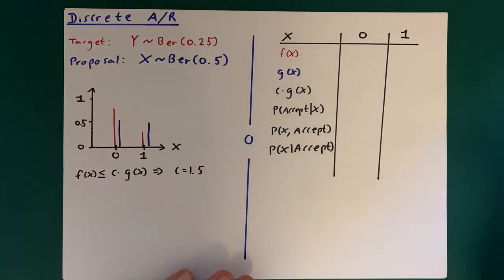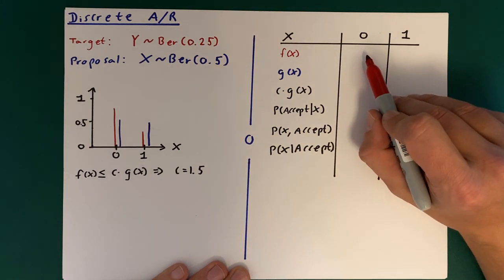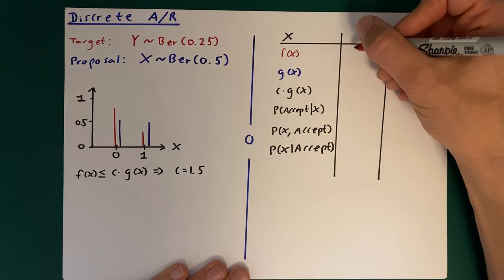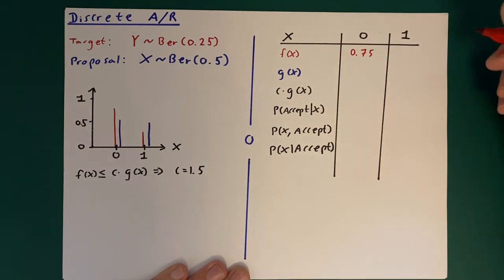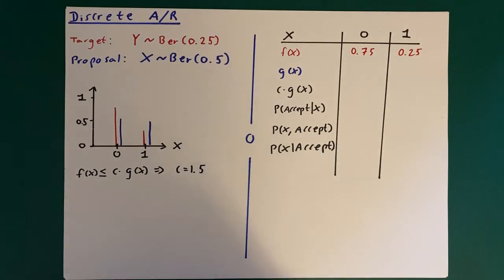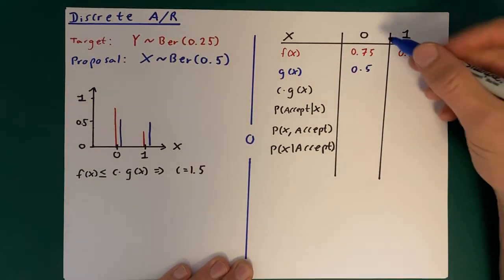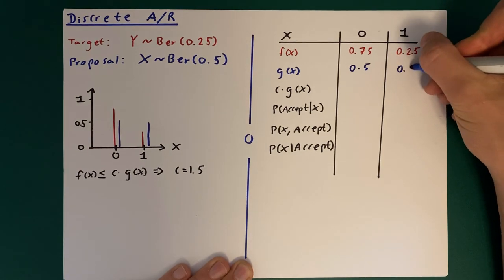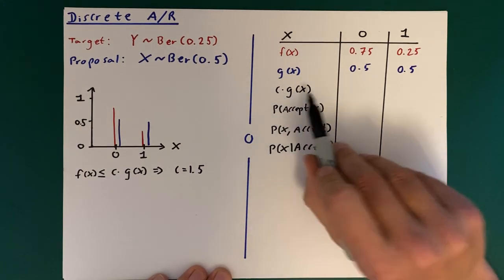So if we fill in this matrix over here: the probability that we want is 0.75, probability of getting 1 is 0.25. From the proposal we had 0.5 probability of getting 0, 0.5 of getting a 1.